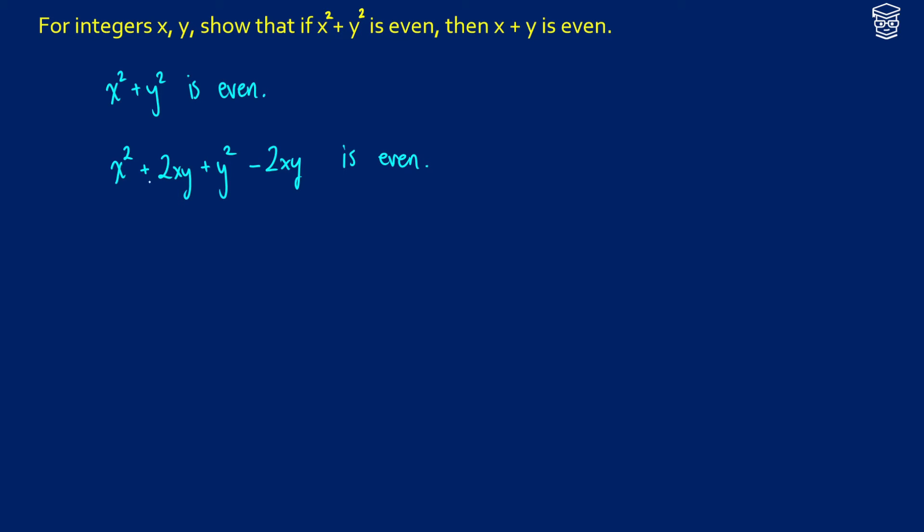Okay, now, what do we know? Well, let's do some factoring here. So we can factor the first three terms as x plus y times x plus y minus 2xy.